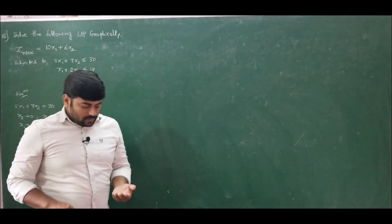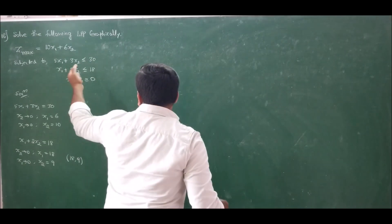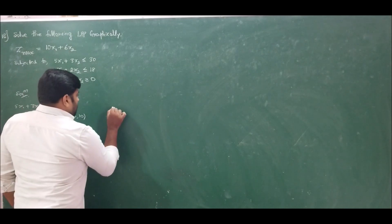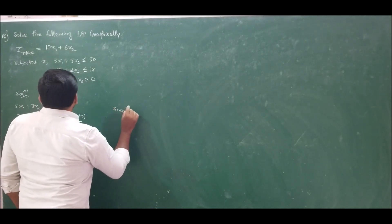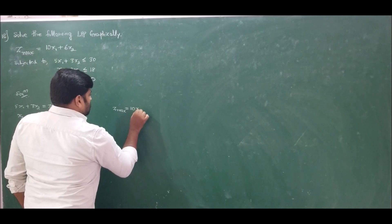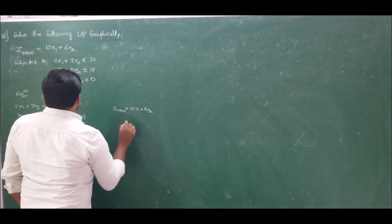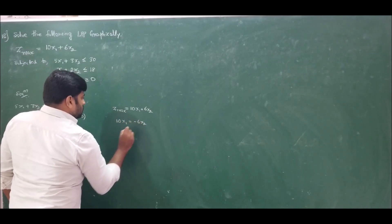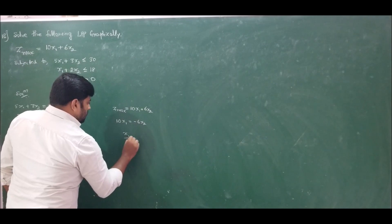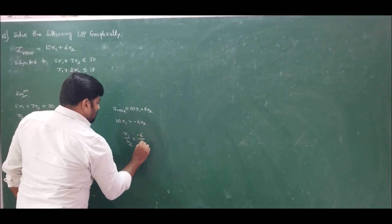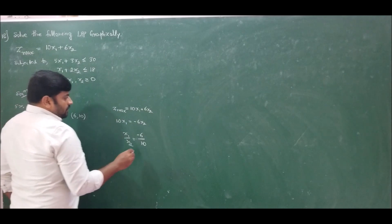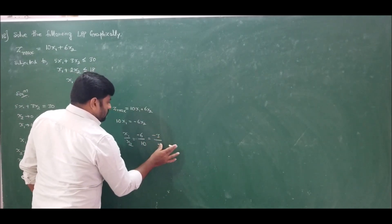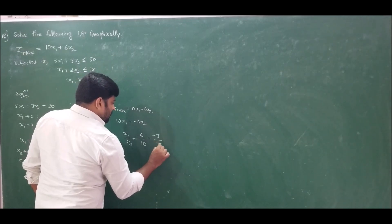Now we plot the graph and find the isoprofit line, which is the line derived from the objective function. The objective function is z max equals 10x1 plus 6x2. Rearranging, we get 10x1 equals minus 6x2, so the slope x1 over x2 equals minus 6 over 10, which simplifies to minus 3 over 5.